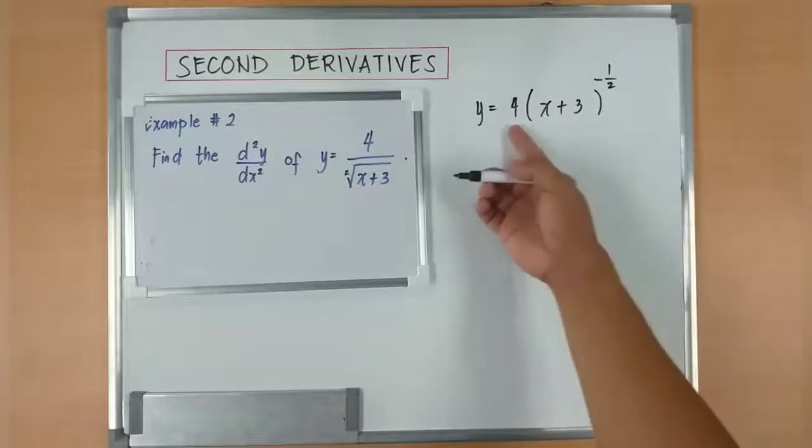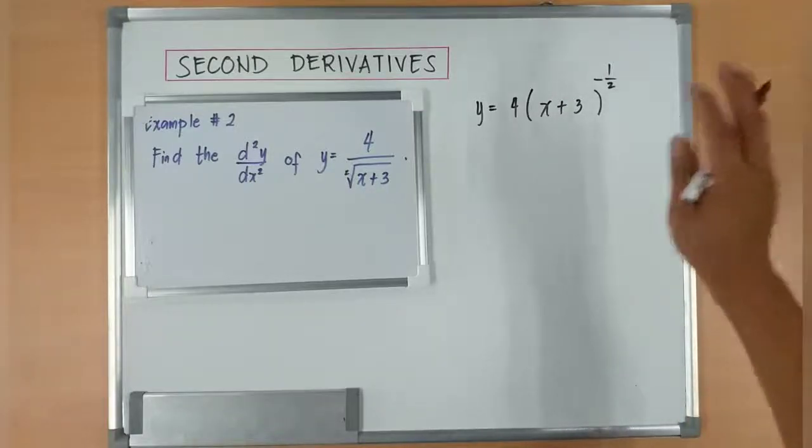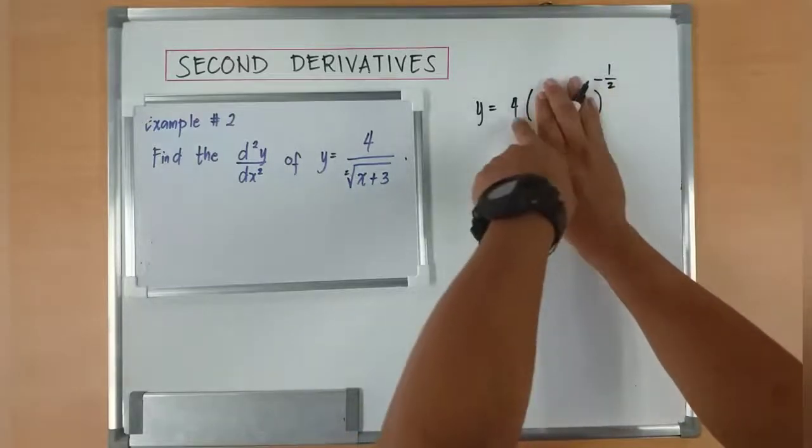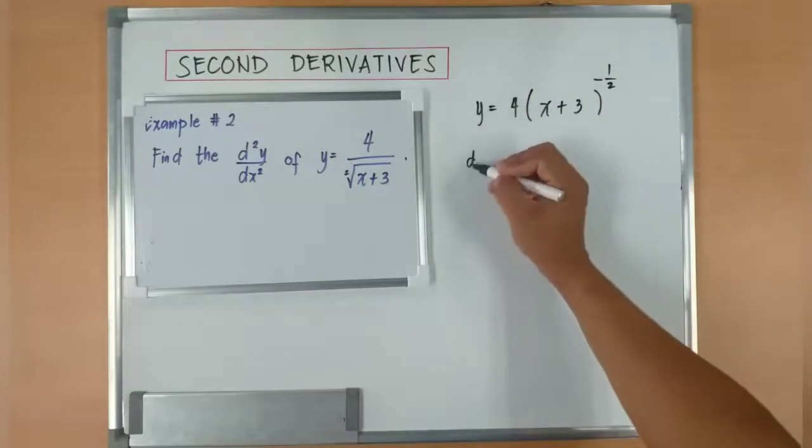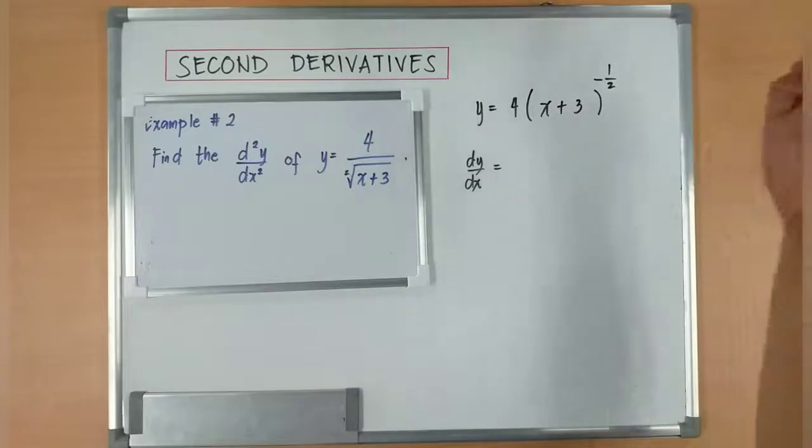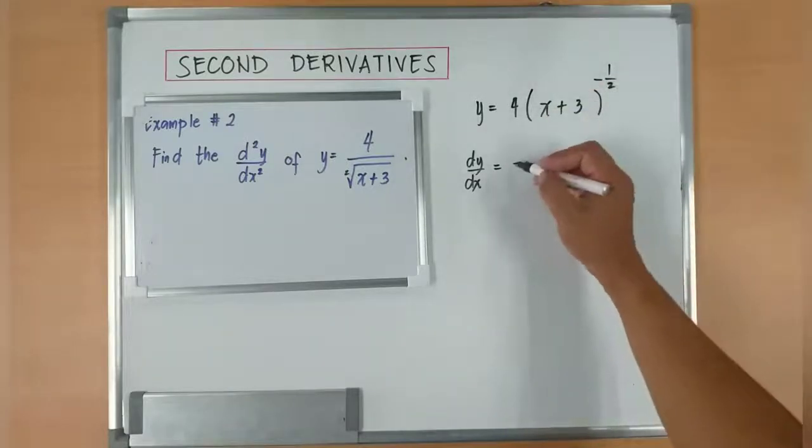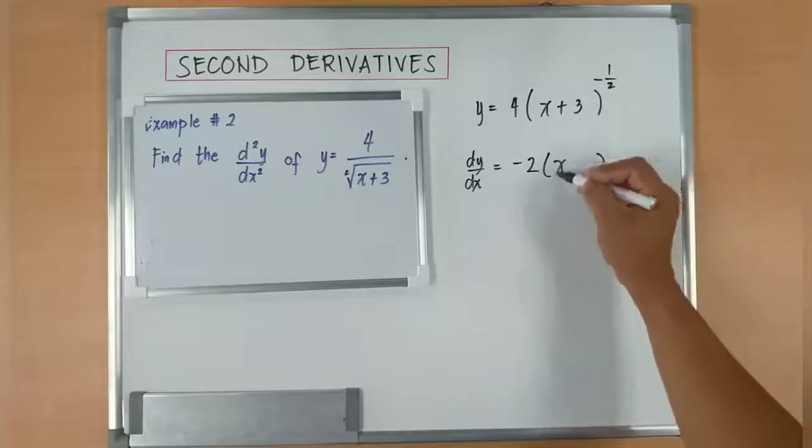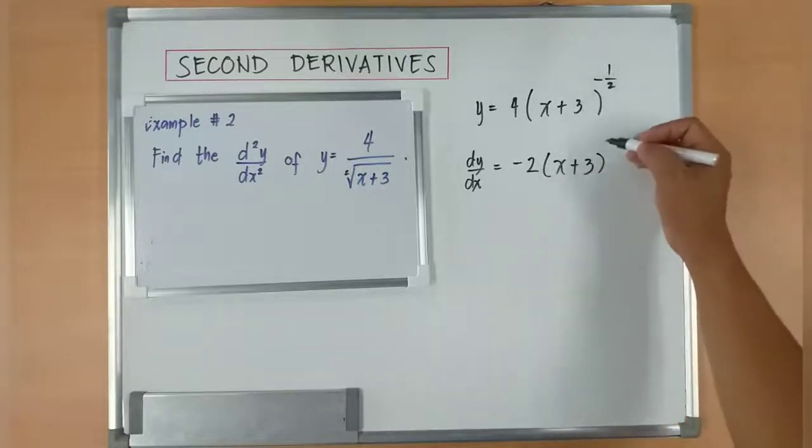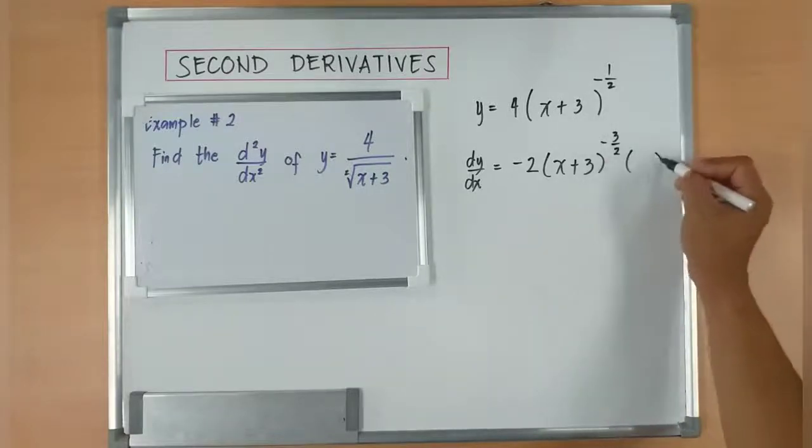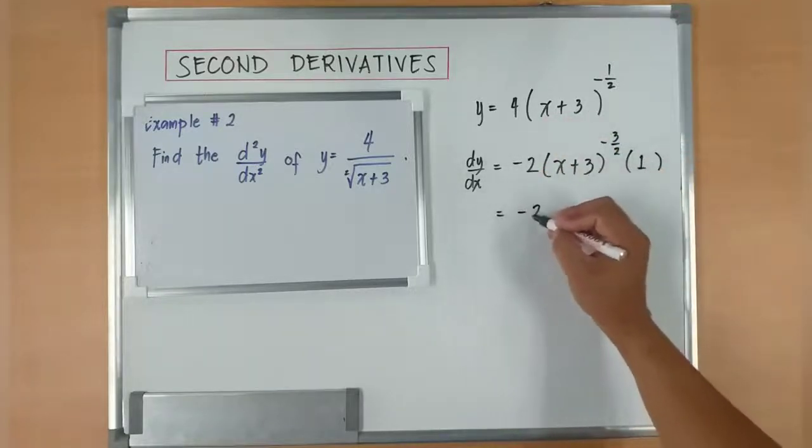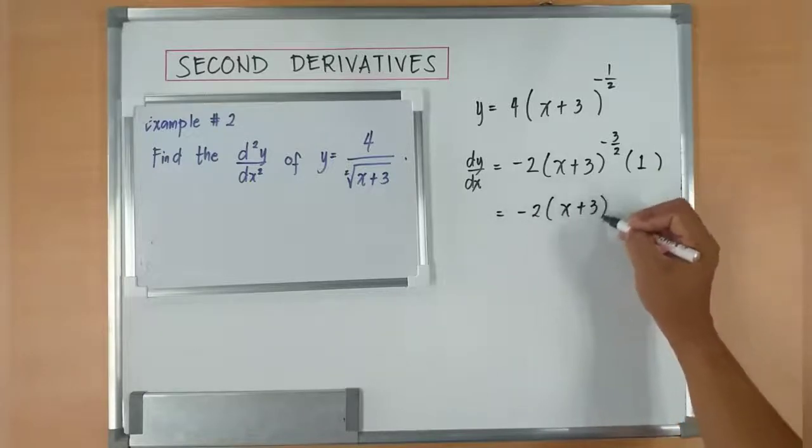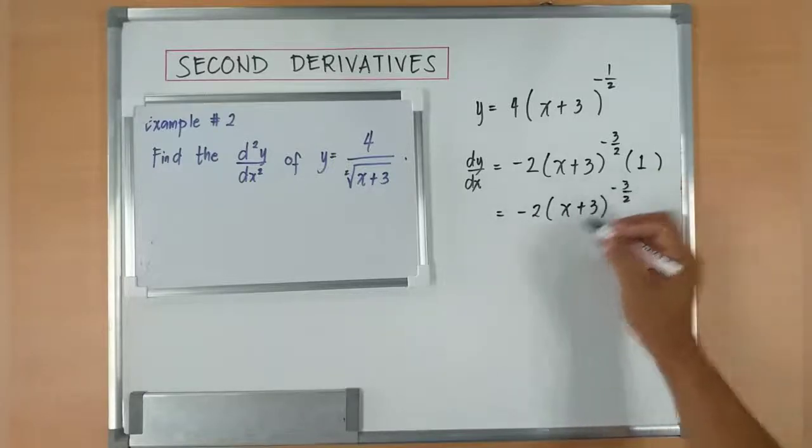Basically, if you are going to study, you are going to apply chain rule. Let's apply cover up method. Negative 1 half times 4 is negative 2. I'm basically doing dy over dx. Bring back x plus 3. Negative 1 half minus 1 is negative 3 over 2. Multiplied by the differentiation of x plus 3 is 1. So it's basically negative 2 bracket x plus 3 to the power of negative 3 over 2. That is dy over dx.